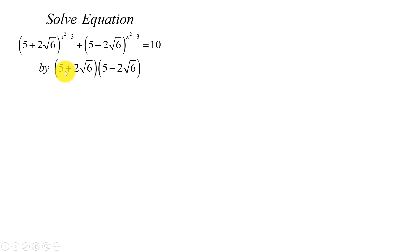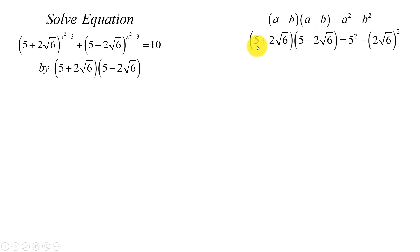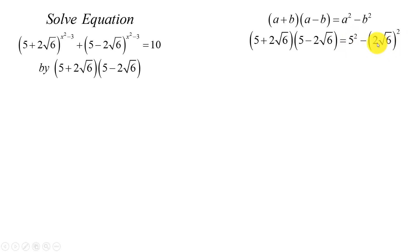We can use the rule that (a + b)(a - b) = a² - b². So (5 + 2√6)(5 - 2√6) gives us 5² - (2√6)², which equals 25 - 24 = 1. So this product equals 1.